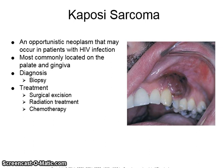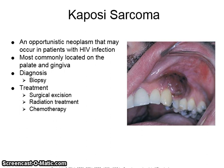Kaposi's sarcoma is an opportunistic neoplasm that may occur in patients with HIV infection. It is most commonly located on the palate and gingiva. Diagnosis is made by biopsy, and it is treated with surgical excision, radiation treatment, and chemotherapy.